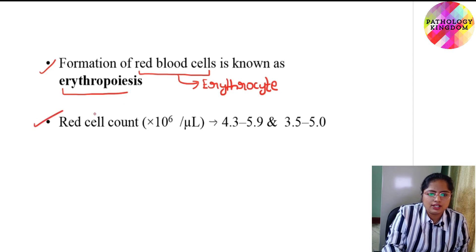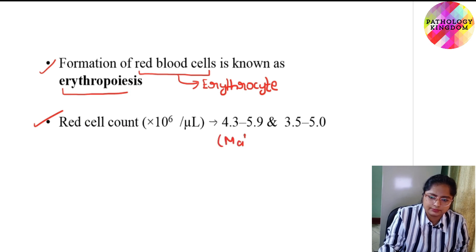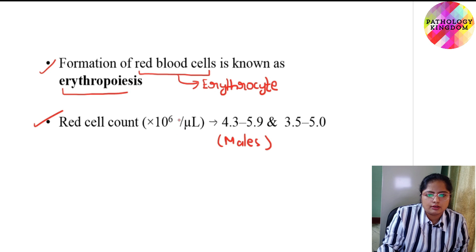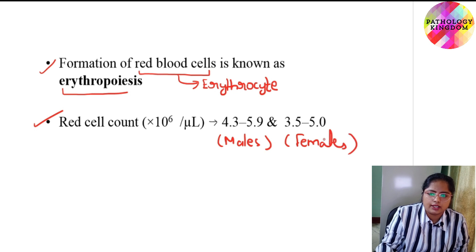Normal red cell count in males is 4.3 to 5.9 millions per microlitre. And in females, it is 3.5 to 5 millions per microlitre.